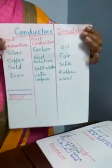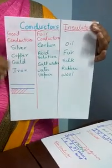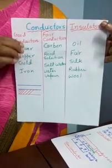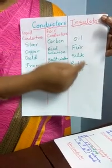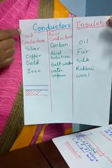Today I am going to talk about conductors and insulators. Conductors are the materials which allow sound, heat, and electricity to pass through them, whereas insulators do not allow this.